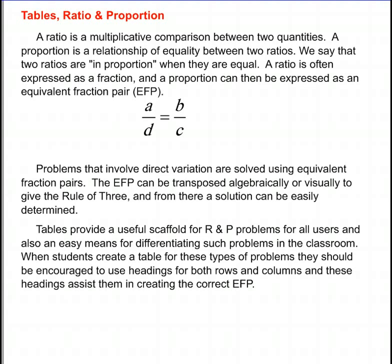Problems that involve direct variation are solved using equivalent fraction pairs. The equivalent fraction pair can be transposed algebraically or visually to give the rule of three, and from there a solution can be easily determined.